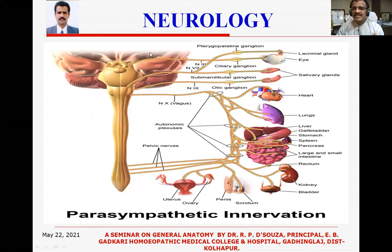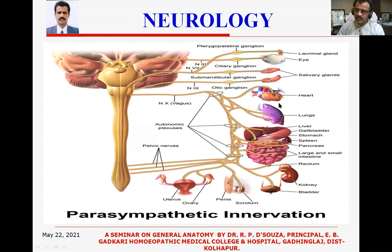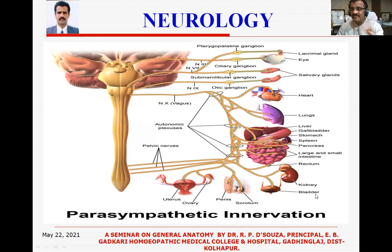Here I am showing you what these seven parasympathetic nerves do. You can see all four cranial nerves — third, seventh, ninth, and tenth — each having target organs to perform their functions. The three sacral nerves — S2, S3, S4 — have work in the lower part of the abdomen, pelvis, perineum, and genitalia. All seven of them look after the whole affair of parasympathetic function.